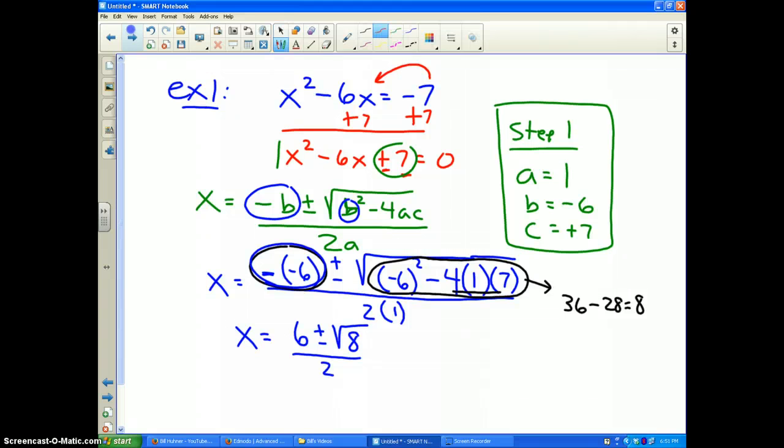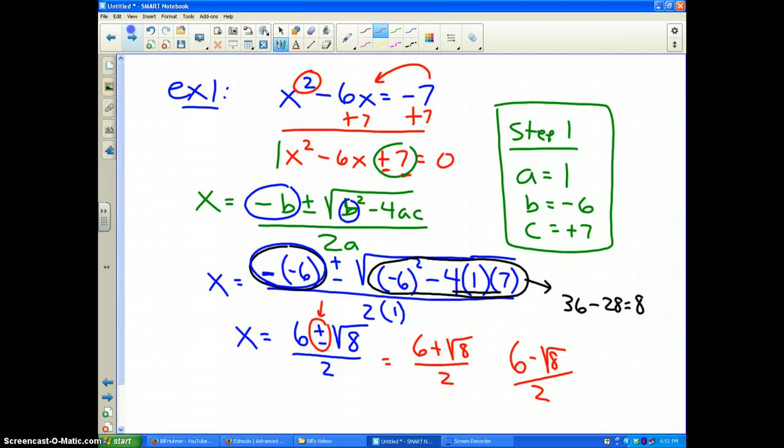Now, you may ask, what is this plus or minus? Well, that's where the two answers come from because it's a squared equation. Therefore, the first answer will be 6 plus the square root of 8 divided by 2, and the second answer will be 6 minus the square root of 8 divided by 2. You break that up, and that's where your two answers come from.